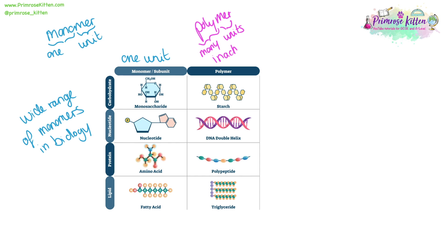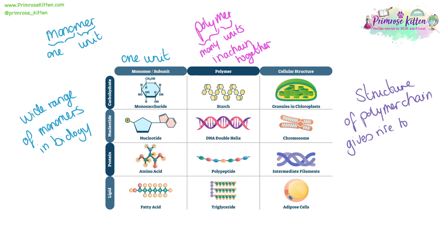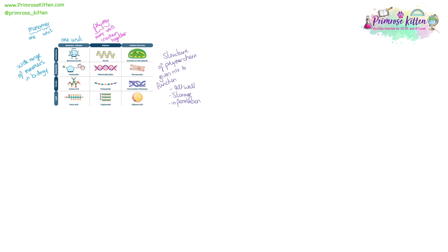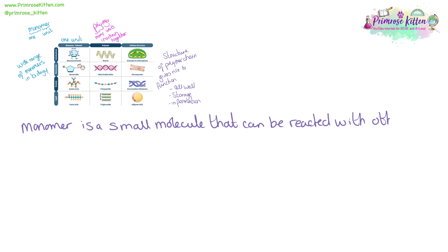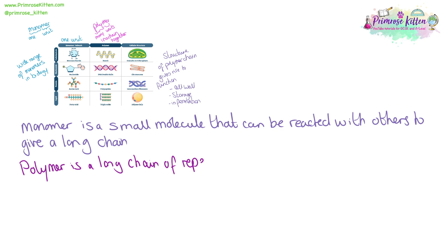So instead of just having one bit, a monomer — a monosaccharide — if we have lots of them together in a chain, we have a polymer, which would be starch. Or a nucleotide is a monomer, but lots of nucleotides altogether will give us the polymer, which for a nucleotide is DNA. The same with amino acid being a monomer, and the polymer of that is going to be a protein chain or a polypeptide. A monomer is a small molecule that can be reacted with others to give a long chain, and a polymer is a long chain of repeating units.